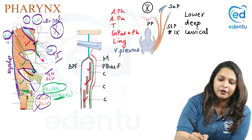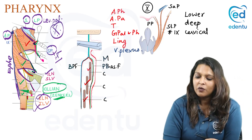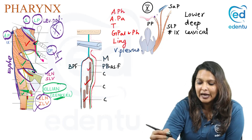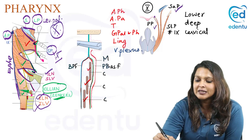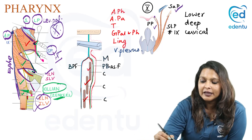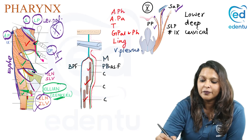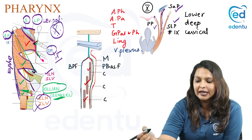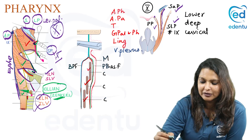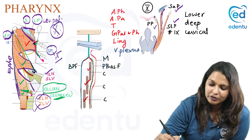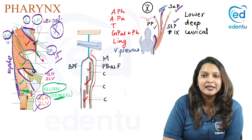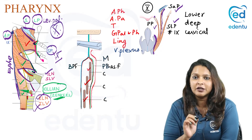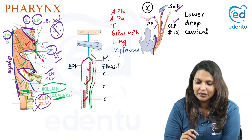All constrictors insert into the pharyngeal raphe in the midline, which extends from the pharyngeal tubercle of the occipital bone. The longitudinal muscles of the pharynx are: palatopharyngeus (attaching from the soft palate), salpingopharyngeus (attaching from the eustachian/auditory tube to the pharynx), and stylopharyngeus (attaching from the styloid process). All three attach to the posterior border of the lamina of the thyroid cartilage.